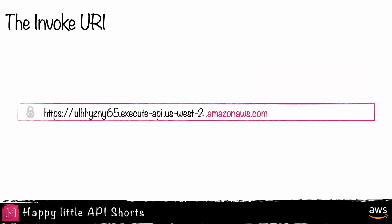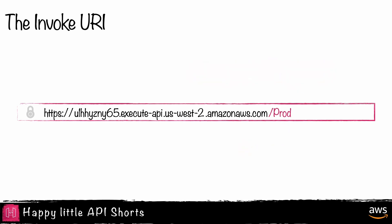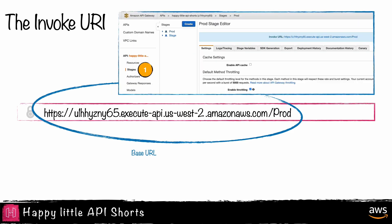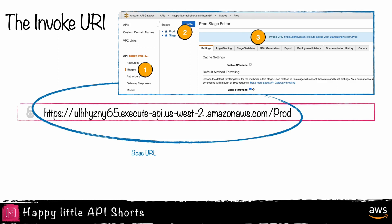The next part of the Invoke URI is the API Gateway stage. While this value is not part of the domain and is actually part of the path, it is considered part of the base URL and required for API Gateway to route the request to the proper stage. Stages in API Gateway allow for different versions of the same API. The base URL for each stage can be found on the API Gateway console under Stages, and each stage will have a unique URL.